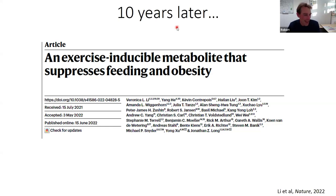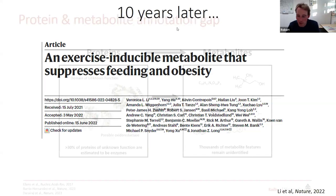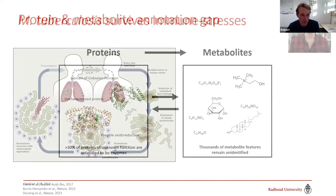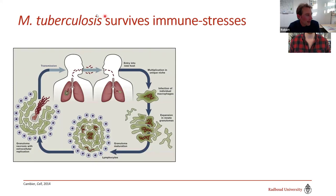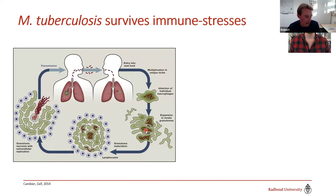The second metabolite-to-protein example is more recent, ongoing in my lab. This time we chose our conditions carefully and picked a metabolite we knew more about, to avoid getting stuck again. We focused on Mycobacterium tuberculosis and its life cycle — patients cough up bacteria that enter a new host's lung, are engulfed by macrophages, but survive using mechanisms to cope with macrophage stresses.